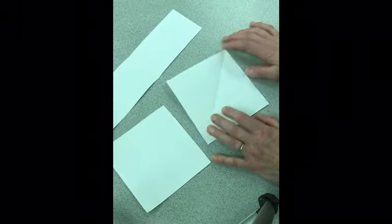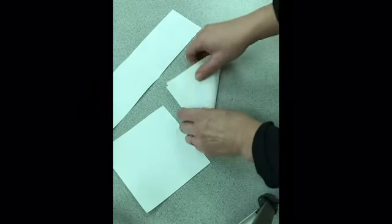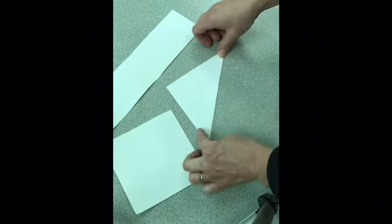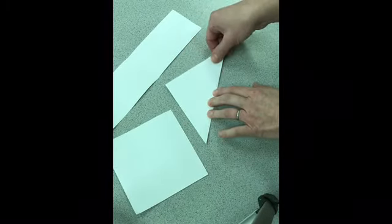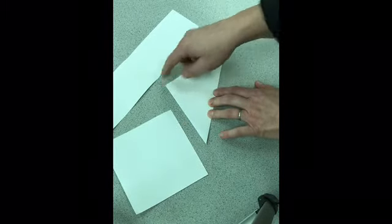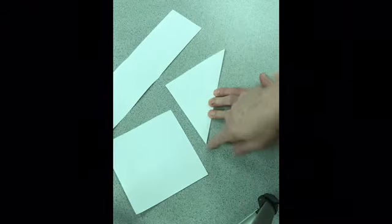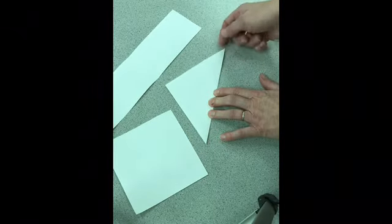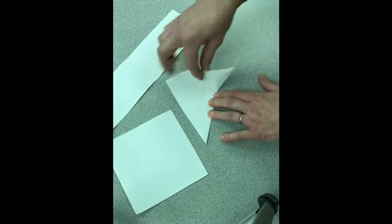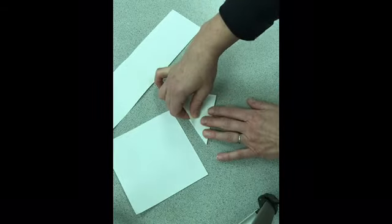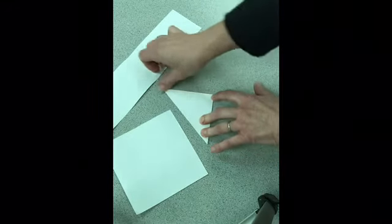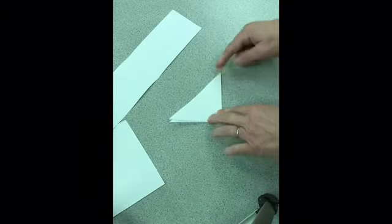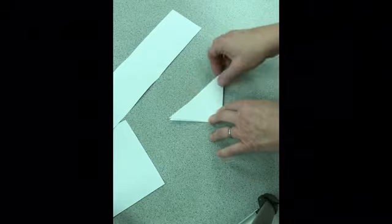For snowflake number one, fold corner to corner, then go on the hypotenuse of this right triangle and fold one tip of the hypotenuse to the other tip of the hypotenuse, and then do that again. You have a new right triangle with your hypotenuse. You take the tip of the hypotenuse to the tip of the other hypotenuse.